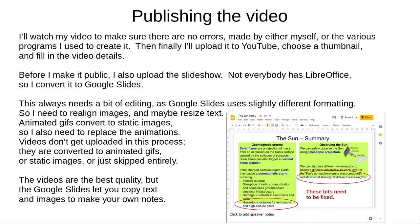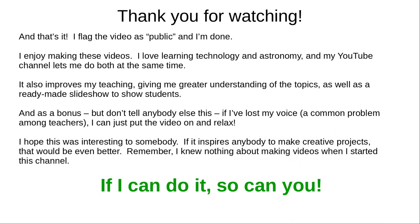Finally, I upload it to YouTube, choose a thumbnail, and fill in the video description and other details. Before I make the video public, I also upload the slideshow. Since not everybody has LibreOffice, I convert it to Google Slides. This always needs a bit of editing, as Google Slides uses slightly different formatting, so I need to realign images and maybe resize some text. Animated GIFs convert to static images, so I need to replace the animations. Videos don't get uploaded here — I convert them to animated GIFs or static pictures, or just leave them out. The YouTube videos are the best quality: they include everything, like my narration and Stellarium animations, but the Google Slides lets you copy text and images to make your own notes. And that's it — I flag the video as public on YouTube, and I'm done.